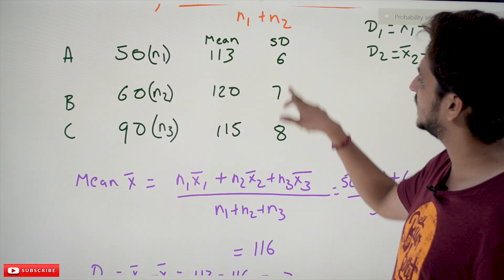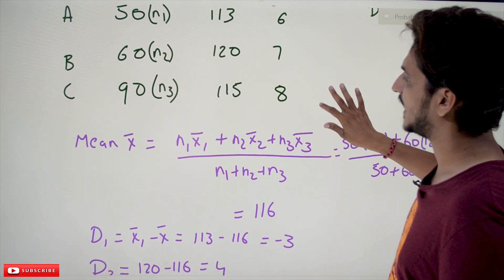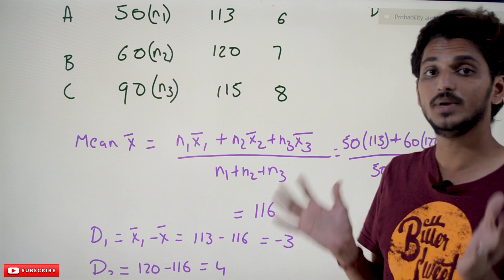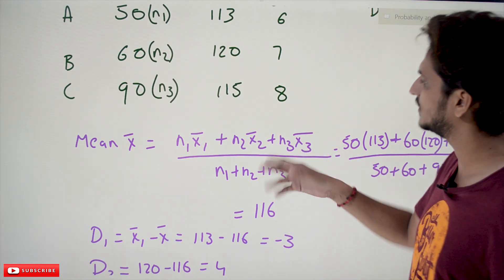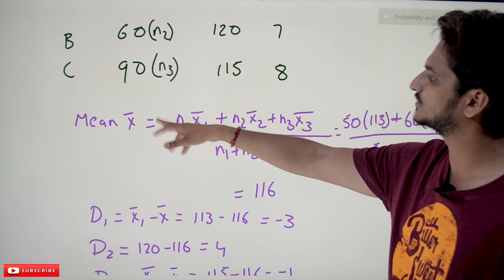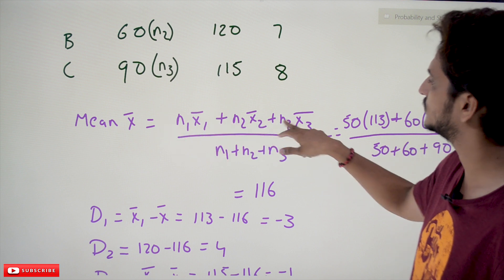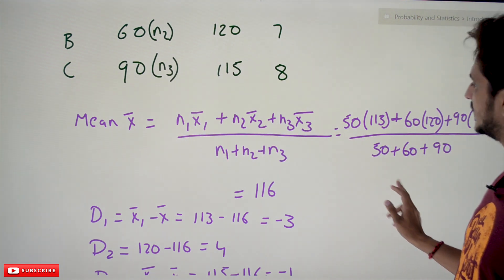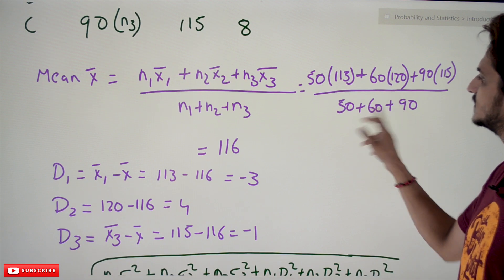If you want to identify the standard deviation and mean for the combination of all three distributions, the combined mean is x̄ = (n₁x̄₁ + n₂x̄₂ + n₃x̄₃) / (n₁ + n₂ + n₃). Substituting the values into this equation, the combined mean value is 116.